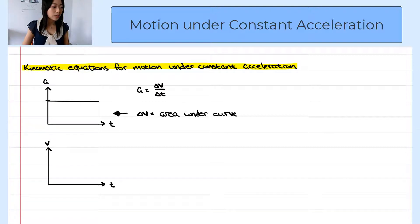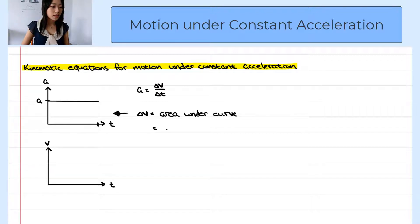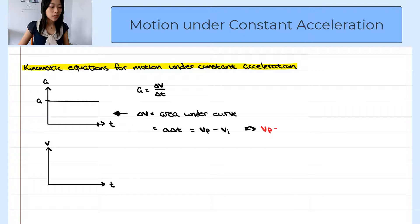Suppose the acceleration has magnitude a, and the change in time is delta t. So delta v would be the constant acceleration times delta t. And delta v is the final velocity minus the initial velocity. So from here, we get the first kinematic equation: final velocity equals initial velocity plus acceleration times delta t.